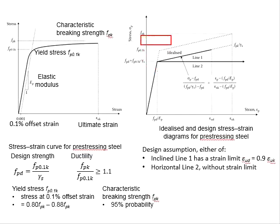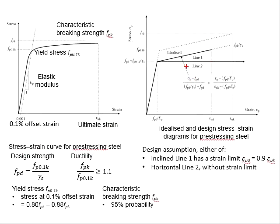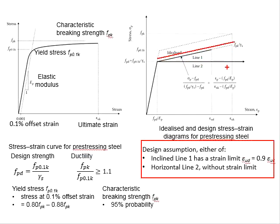Similar to the assumptions for the Eurocode on the non-prestressing steel, which we have discussed previously, there are two assumptions of the post-yielding response of the pre-stressing steel. The design assumptions is either by the incline line 1 or the horizontal line 2.